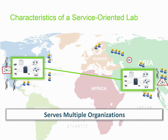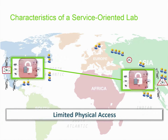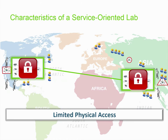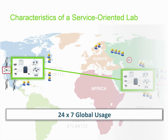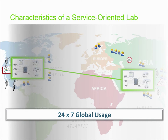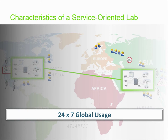Not only do service-oriented labs need to be agile, they also have limited physical access. In most cases, lab services are extended across a wide geography and it simply isn't practical for test engineers to have physical access to the lab. Additionally, since service-oriented labs are larger than single-use labs, it is necessary to limit the physical access in order to maintain control of the lab infrastructure and topology. When implemented on a global scale, service-oriented labs operate on a 24-by-7 basis, meaning that test engineers are using the lab around the clock and that test topologies can be created any time of the day or night.